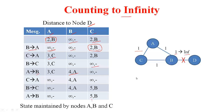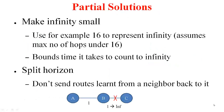So how does one solve this problem? What are your thoughts? Do you think a solution is even feasible? One solution is to make infinity small — basically use a smaller number to represent the maximum cost of a path. For example, you could use 16 to represent infinity, assuming the cost metric is hop count and the maximum number of hops in the network is under 16. So if you see numbers greater than this, that means infinite cost. All this does is bound the time it takes to count to this infinity.